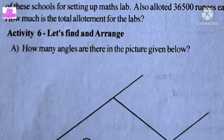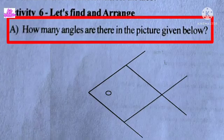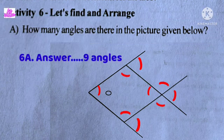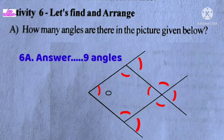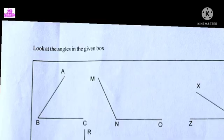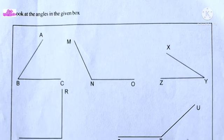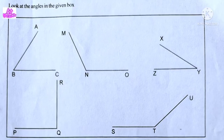Activity 6: How many angles are there in the picture given below? Look at the angles in the given box. There is a box with angles listed.